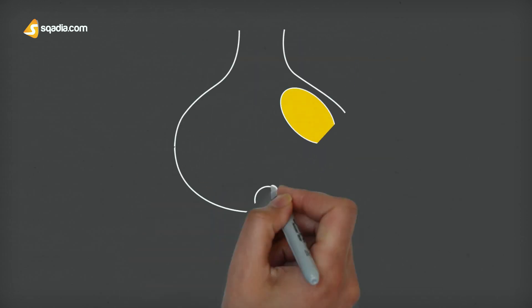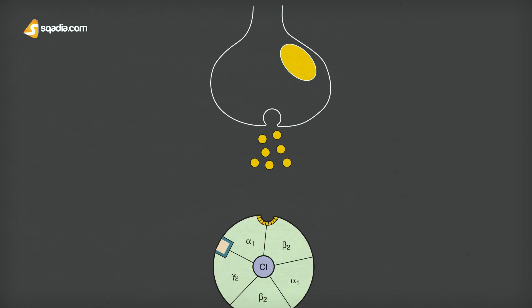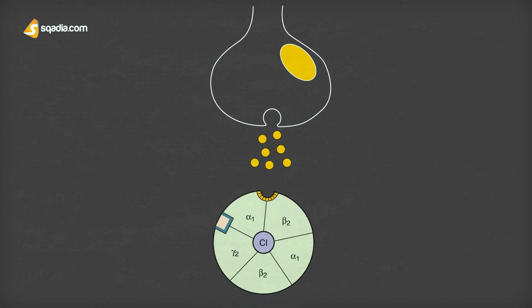These are thought to be caused mainly by the enhancement of gamma-aminobutyric acid or GABA-mediated inhibition in the central nervous system. This GABA released from the nerve terminals binds to GABA receptors.